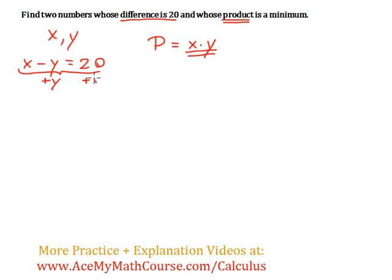So I will add a y to both sides of the equation. So these cancel out. So I bring down the x and I get 20 plus y. So I will take this and plug it into x.